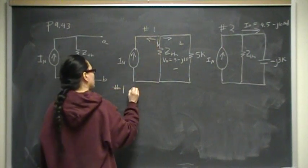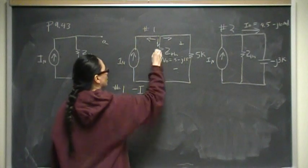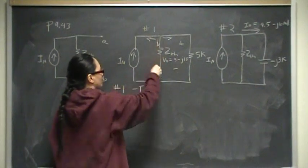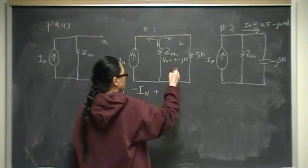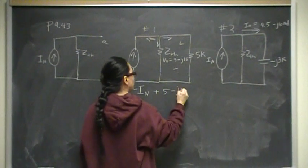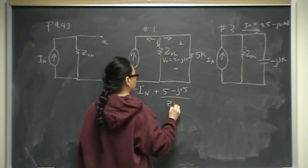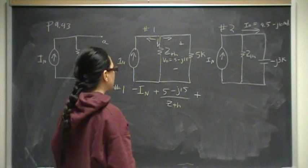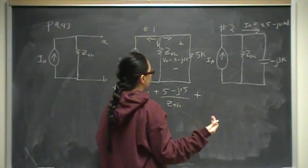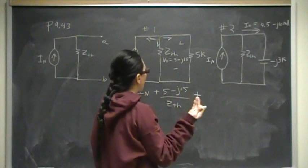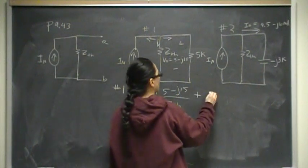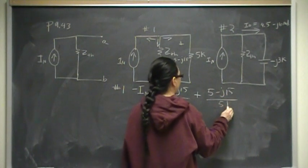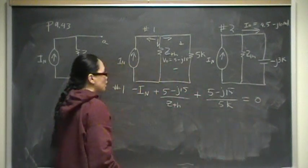We got this current going into the node, so that means minus I sub N. Current away from the node is positive, current into a node is negative. This here is going to be V out, which is 5 minus J15 over Z-Thevenin, plus this current here. That current is, of course, V equals I times R. Therefore, I equals V over R. This is going to be 5 minus J15 over 5K. That equals zero. That's equation number one.